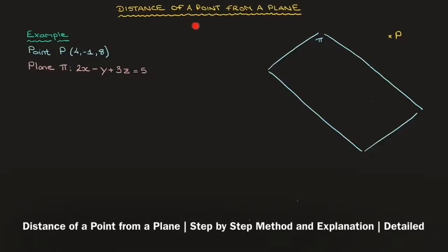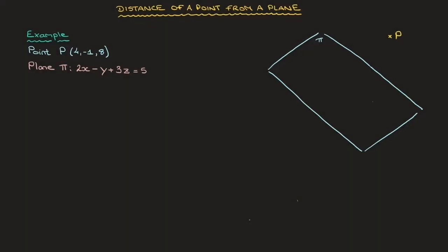We now learn how to find the distance of a point from a plane, and to do that we're going to work through an example. We're given a point P with coordinates (4, -1, 8), as well as a plane pi whose Cartesian equation is 2x - y + 3z = 5. On the right hand side of the screen, I've illustrated this example — we can see the point P and the plane pi. What we need to find is the distance from this point P to this plane.